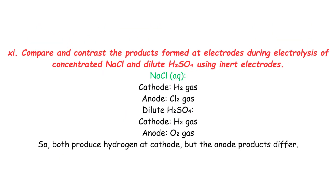Long Question: Compare and contrast the products formed at electrodes during electrolysis of concentrated NaCl and dilute H₂SO₄ using inert electrodes. In concentrated NaCl (aq): cathode produces H₂ gas, anode produces Cl₂ gas. In dilute H₂SO₄: cathode produces H₂ gas. So both produce hydrogen at the cathode, but the anode products differ.